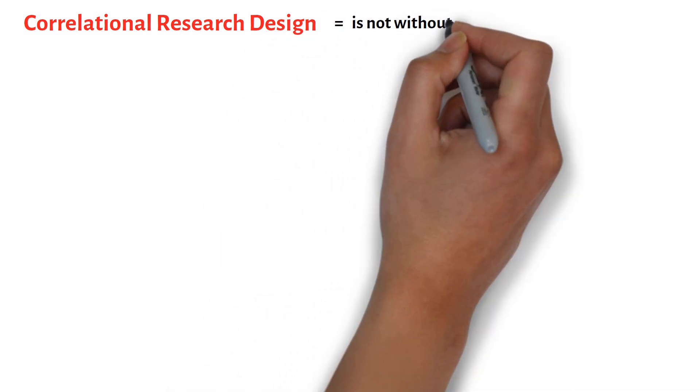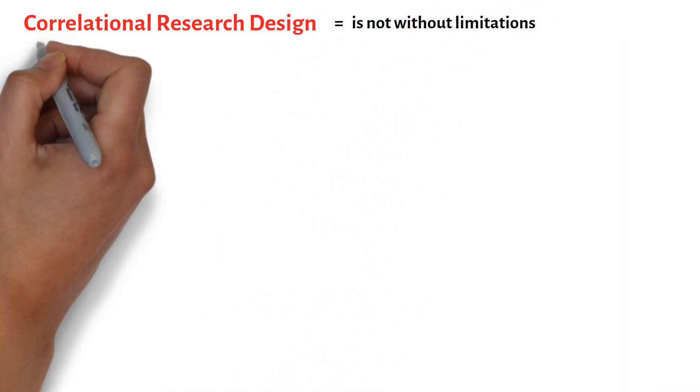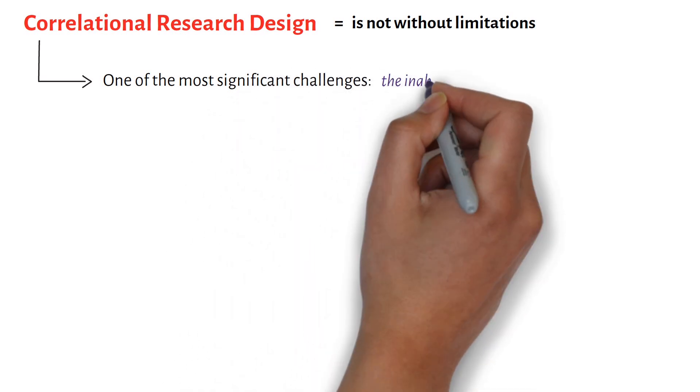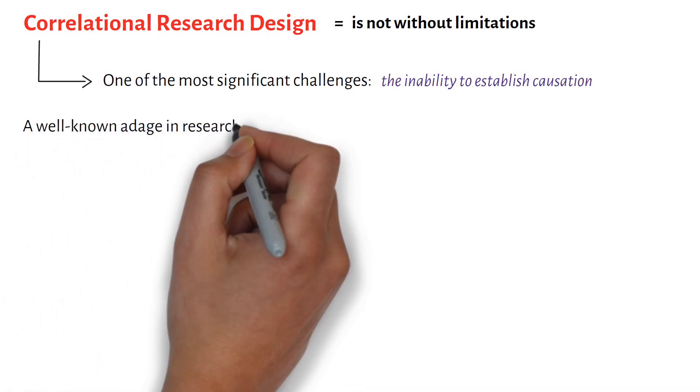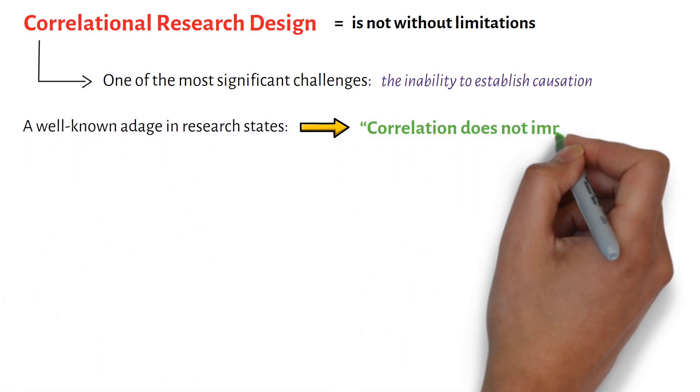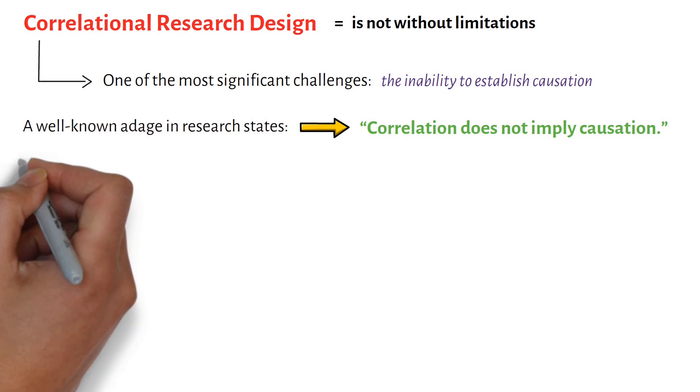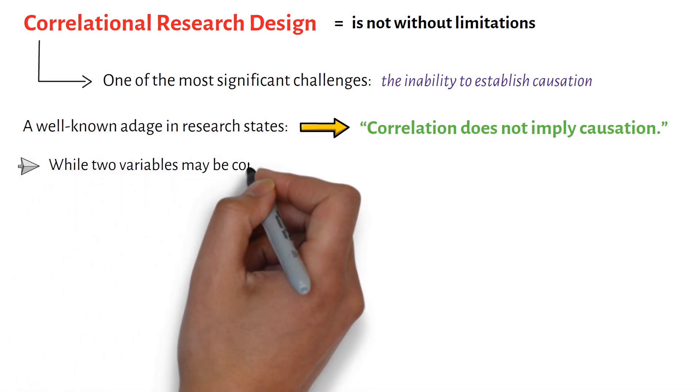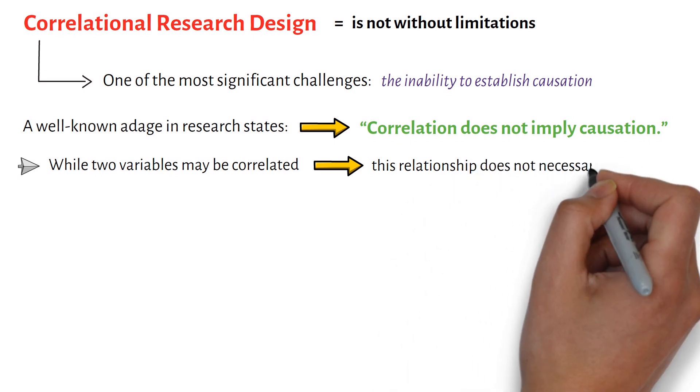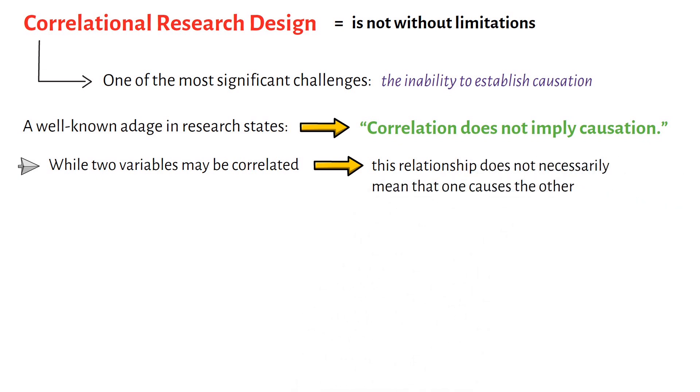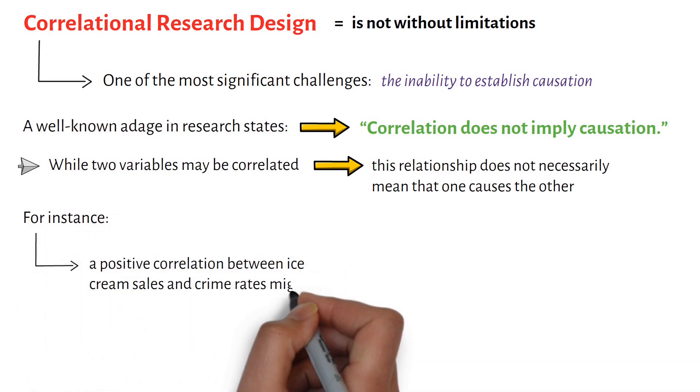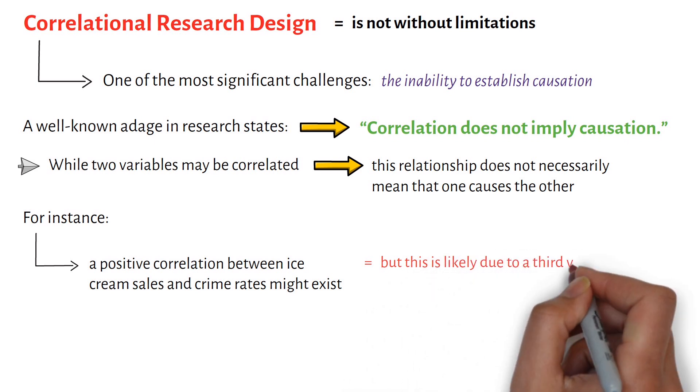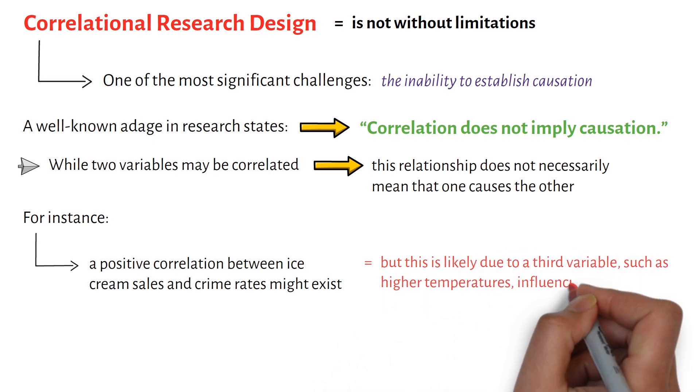Despite its strengths, correlational research design is not without limitations. One of the most significant challenges is the inability to establish causation. A well-known adage in research states: correlation does not imply causation. While two variables may be correlated, this relationship does not necessarily mean that one causes the other. For instance, a positive correlation between ice cream sales and crime rates might exist, but this is likely due to a third variable, such as higher temperatures influencing both factors.